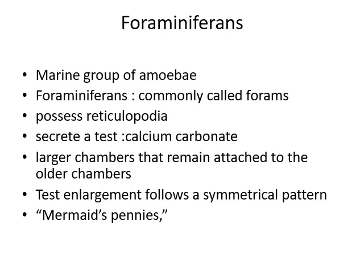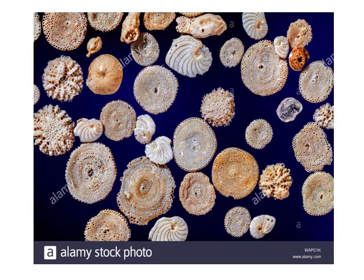Foraminiferans have large chambers that remain attached to older chambers, meaning the shell grows as the animal grows. Newer shells are larger and attach to the older, smaller chambers. Test enlargement follows a symmetrical pattern, and Nummulites is an example. In the diagram you can see the stepwise extension of the shell; these specimens shown are only the shells, as the live animals are no longer present.